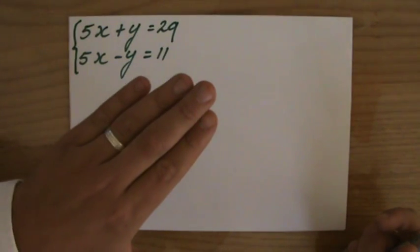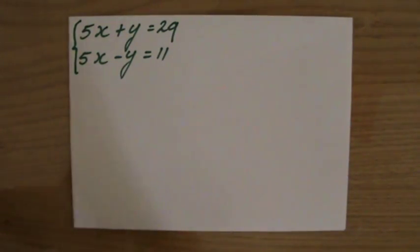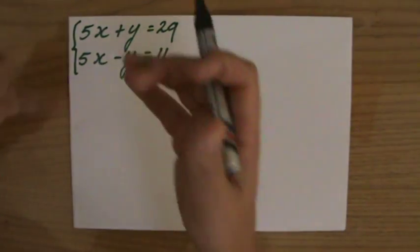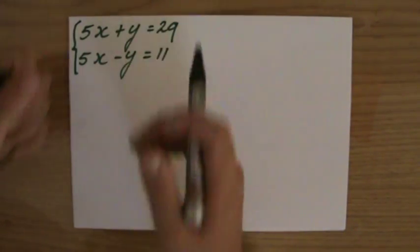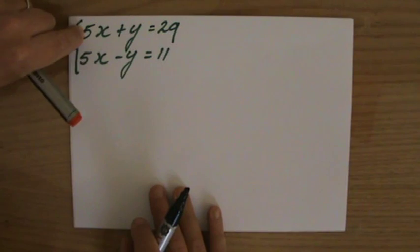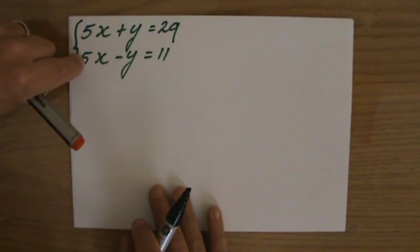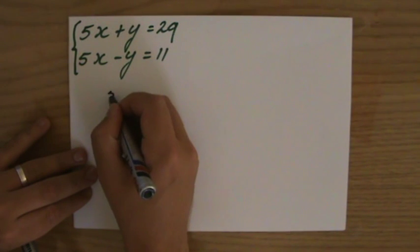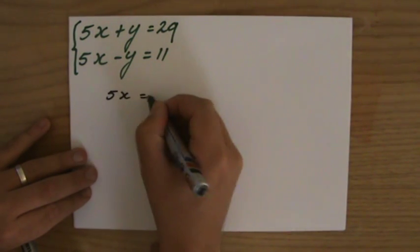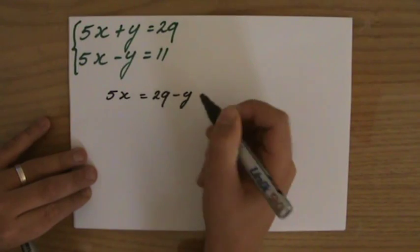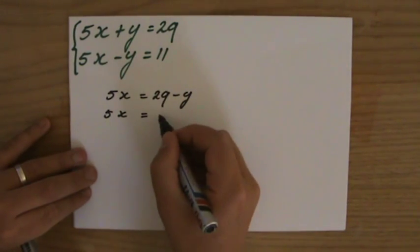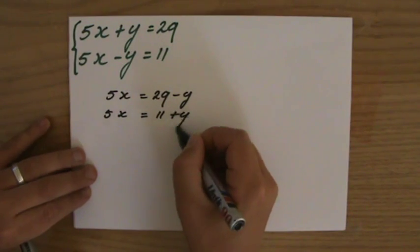Now I'm going to do it slightly different because I see a 5x here and I see a 5x there. Well, those x's are the same. Those y's are the same as well by the way. That makes 5x the same as 5x. Now if I would make 5x the subject: 29 minus y. And I do the same for the other one. 5x the subject equals 11 plus y.